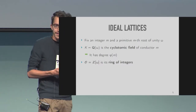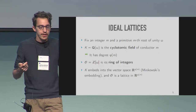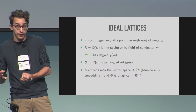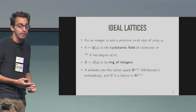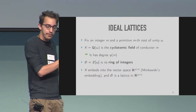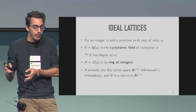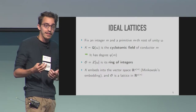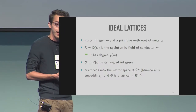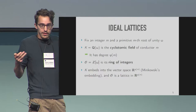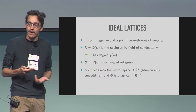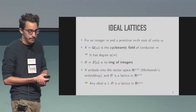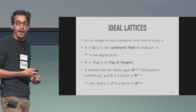So where are our lattices? k is a number field of degree phi of m, so it embeds into the real vector space of dimension phi of m through what we call Minkowski's embedding. Through this embedding of the field into a vector space, the sub-ring — the ring of integers — becomes a lattice. So O can be seen as a lattice in this real vector space of dimension phi of m. But in fact, we have many more lattices because any ideal in this ring O is also a lattice in that vector space. These are what we call ideal lattices.